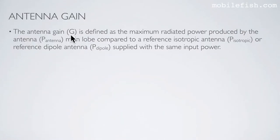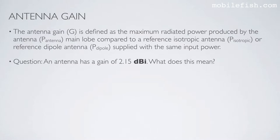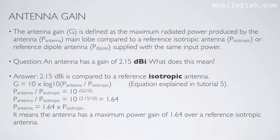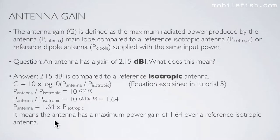The antenna gain, often referred to by the letter G, is defined as the maximum radiated power produced by the antenna main lobe compared to a reference isotropic or reference dipole antenna supplied with the same input power. An antenna has a gain of 2.15 dBi — this means it is compared to a reference isotropic antenna. Using the gain equation rearranged, entering 2.15 dBi gives a gain of 1.64. So P_antenna is 1.64 times P_isotropic — the antenna has a maximum power gain of 1.64 over a reference isotropic antenna.